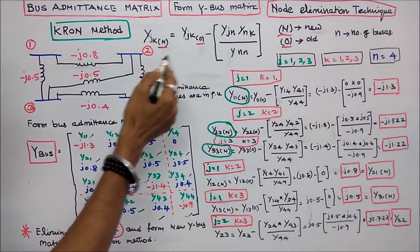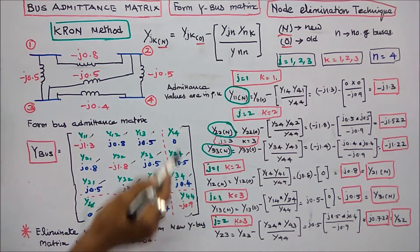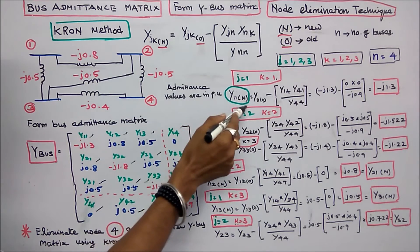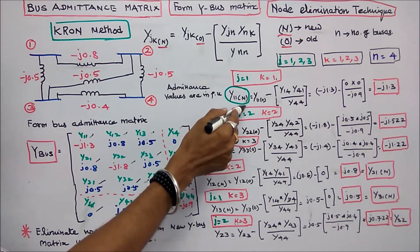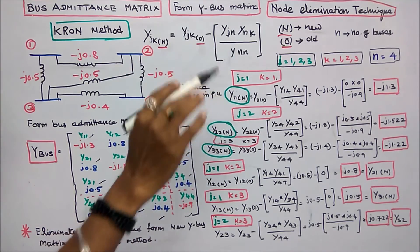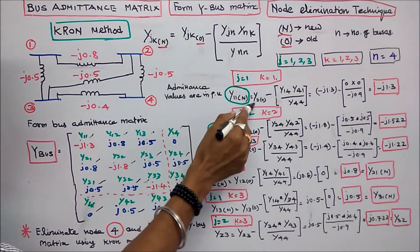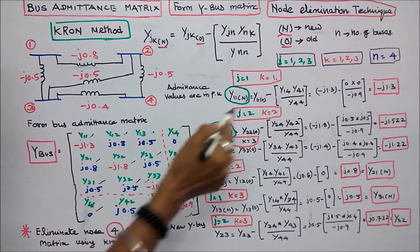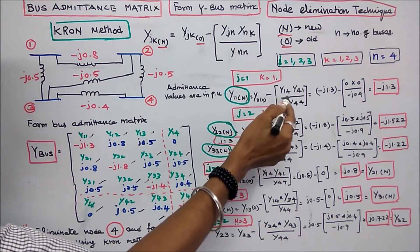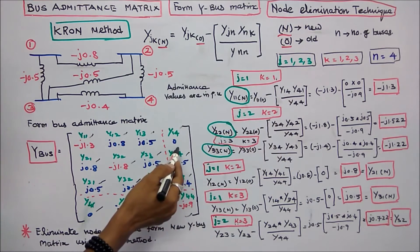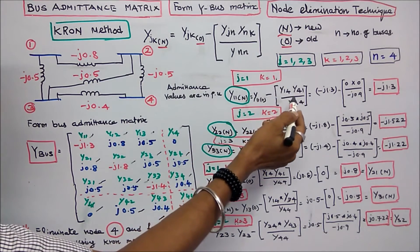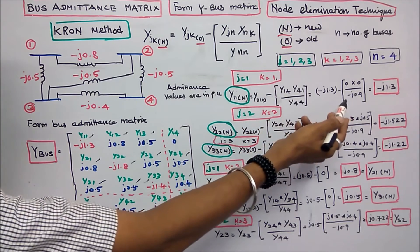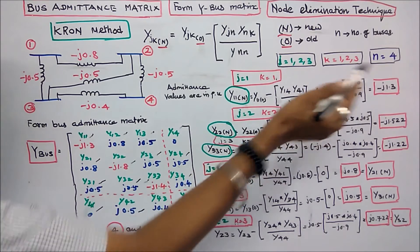Where N is the node being eliminated, J and K each range from 1 to 3. Applying the formula for Y11 new: Y11(new) = Y11(old) minus Y14 times Y41 divided by Y44. Y11(old) is minus j1.3, and since Y14 equals 0 and Y41 equals 0, the result is minus j1.3.